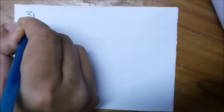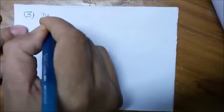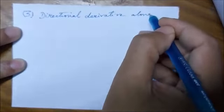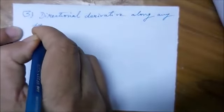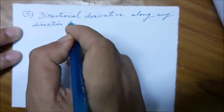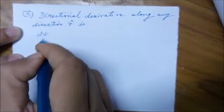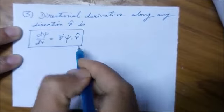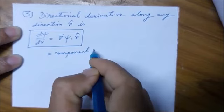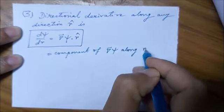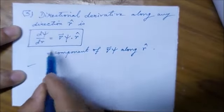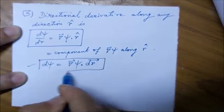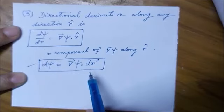The third point: the component of grad psi along r hat gives the directional derivative in that direction. Another important relation follows: d psi equals grad psi dot dr, where r cap into dr gives us vector dr.